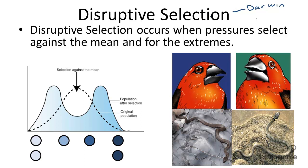Darwin did not come up with the theory of disruptive selection, but rather his theories led to the development of three different types of natural selection.